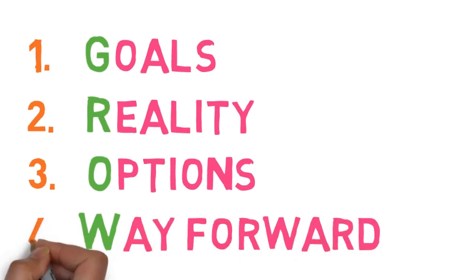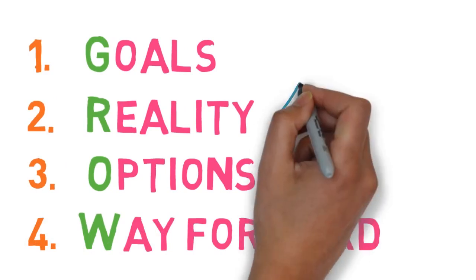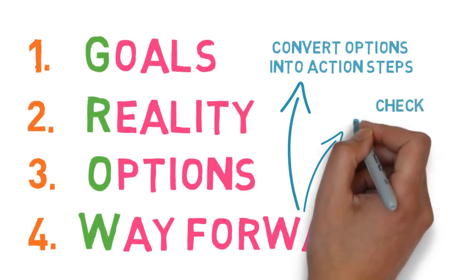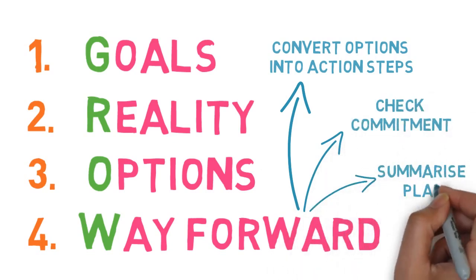Establishing a way forward is the fourth and final step in the GROW model. This stage is generally concerned with converting options into action steps, checking the commitment of the client, and summarizing the plan discussed.